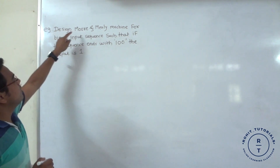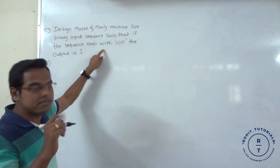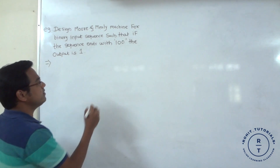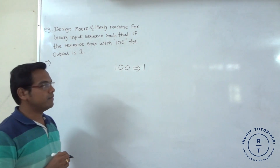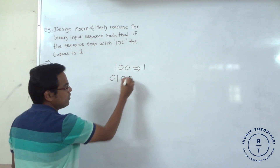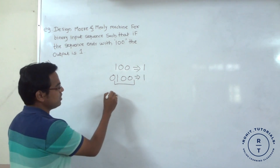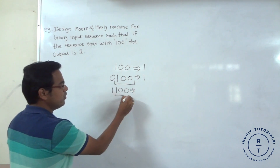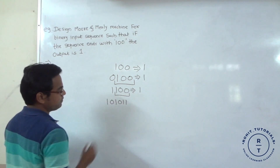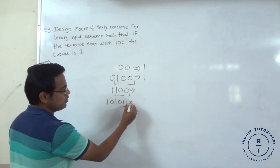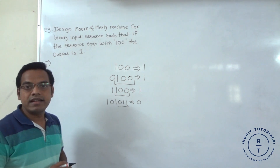Problem statement: design Moore and Mealy machines for a binary input sequence such that if the sequence ends with 100, the output is 1. For example, if the string is 0100, as it ends with 100, the output is 1. If the string is 1100, as it also ends with 100, the output is 1. But if the string is 101011, as it doesn't end with 100, the output is 0. We consider this particular combination while designing the finite automaton.